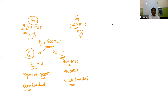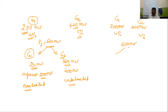If both generators had the same droop — say 4% — then the 600 MW load would be shared proportionally: G1 takes 200 MW and G2 takes 400 MW. This is the ideal distribution when droop characteristics are equal.